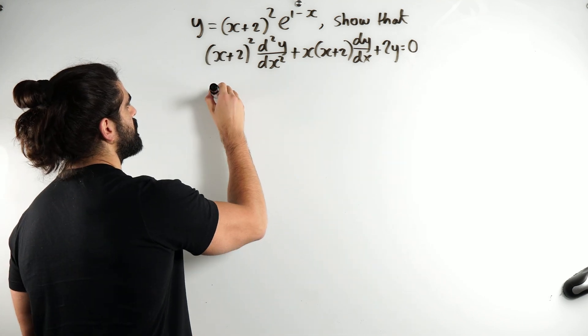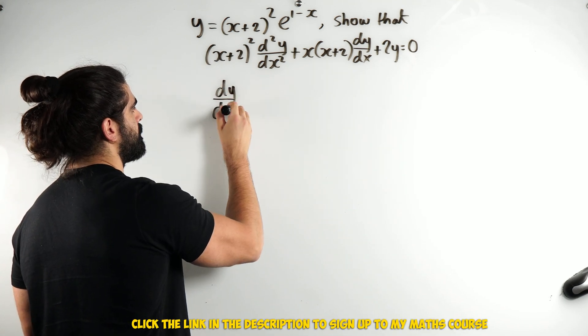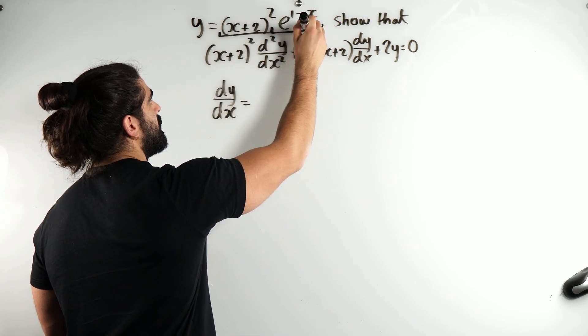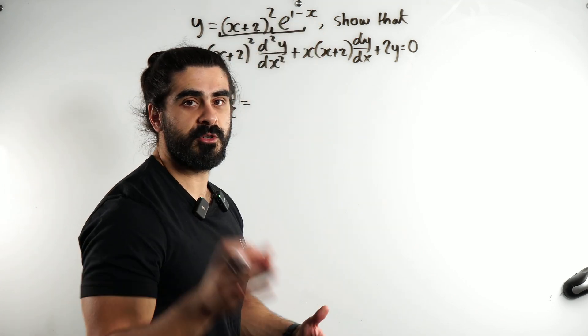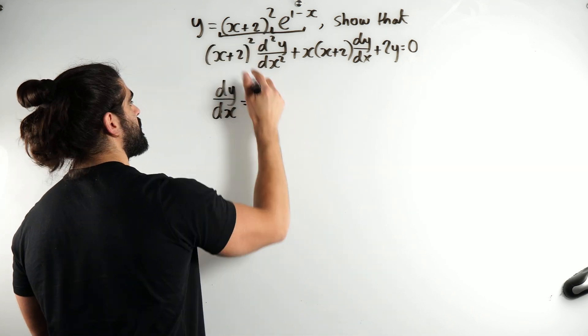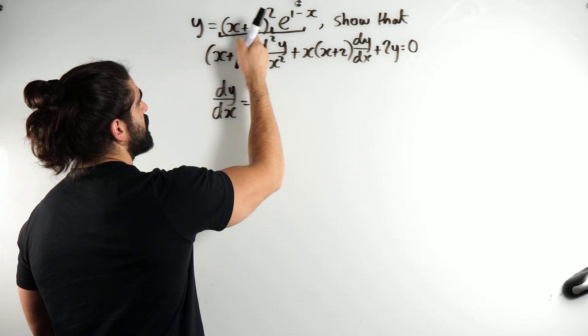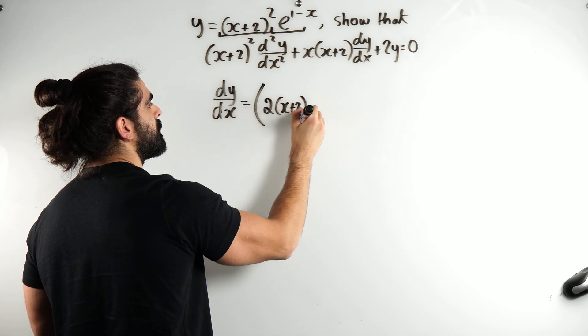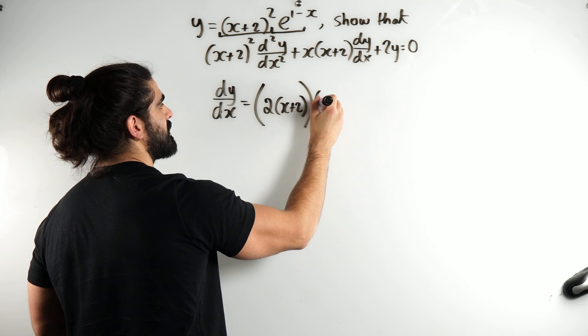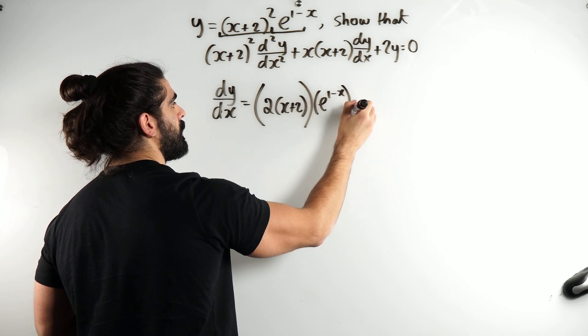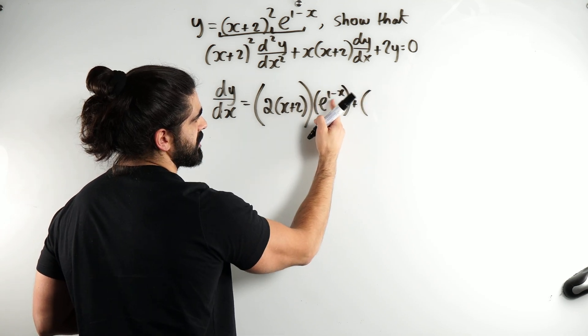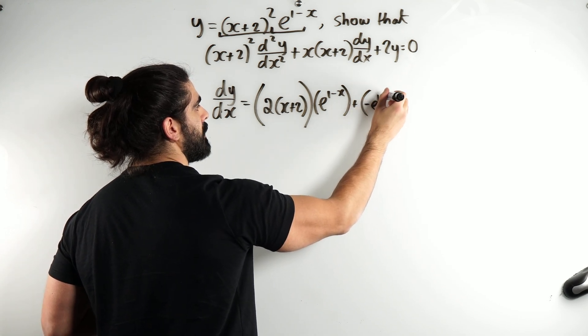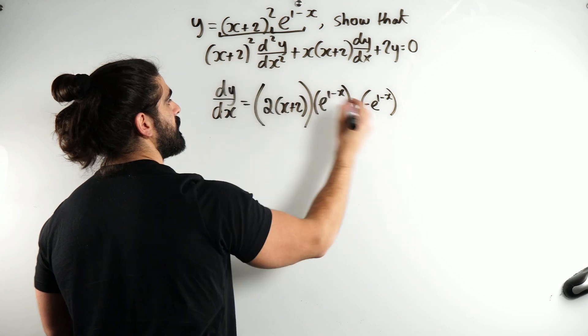First thing we're going to do is differentiate once. There are two functions here, we're going to use product rule. Differentiate the first term, we differentiate what's inside, that's just 1, so bring down the power, knock one off the power, then we times by the second term, plus differentiate the second term, you just differentiate the power there, that's minus 1, comes down, e to the 1 minus x, and then we times by the first term.